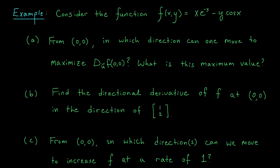We've talked lots of theory, now let's try an example together. We're considering the function f(x,y) = xe^{-y} - y cos x. In part a we'd like to know from the origin in which direction we can move to maximize our directional derivative, and what is this maximum value. In part b we're looking to compute a directional derivative at (0,0) in the direction of the vector (1,2). And in part c, from the origin, in which directions can we move to increase our function at a rate of 1? I encourage you to pause the video and attempt whatever part speaks to you — a, b, and c are all independent, so start wherever you like.